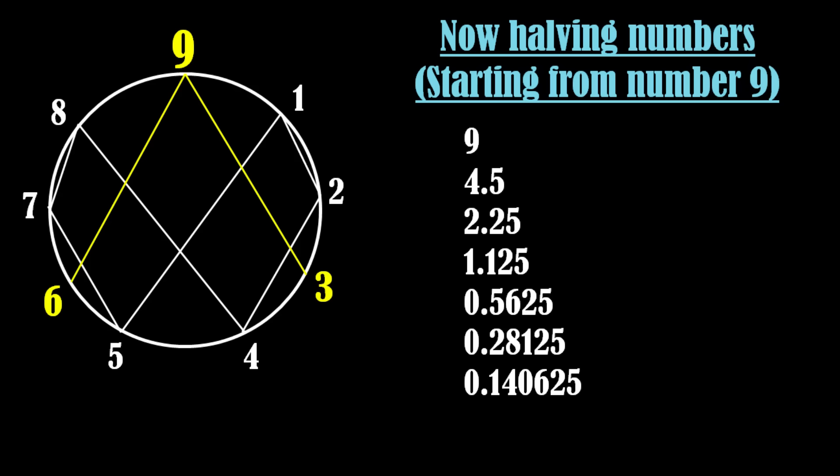What will happen if we halve the numbers repeatedly starting from number 9? What do you see? We are getting number 9 every time. No other number is present in the sequence.